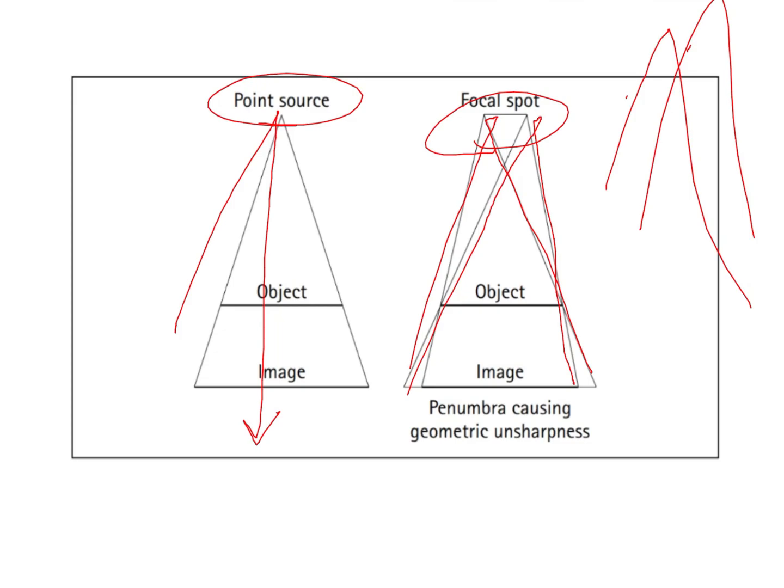When multiple rays, after being reflected from the focal spot, actually end up being on the object, they are going to create multiple images because it is not a single ray which has passed through the focal spot as well as the object, but there have been multiple rays and the direction of all of these rays is different.